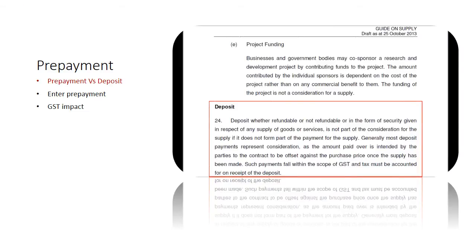According to the Guide on Supply, a deposit, whether refundable or not refundable, or in the form of security given in respect of any supply of goods or services, is not part of the consideration for the supply if it does not form part of the payment for the supply. Generally, most deposit payments represent consideration, as the amount paid over is intended by the parties to the contract to be offset against the purchase price once the supply has been made. Such payments fall within the scope of GST, and tax must be accounted for on receipt of the deposit.